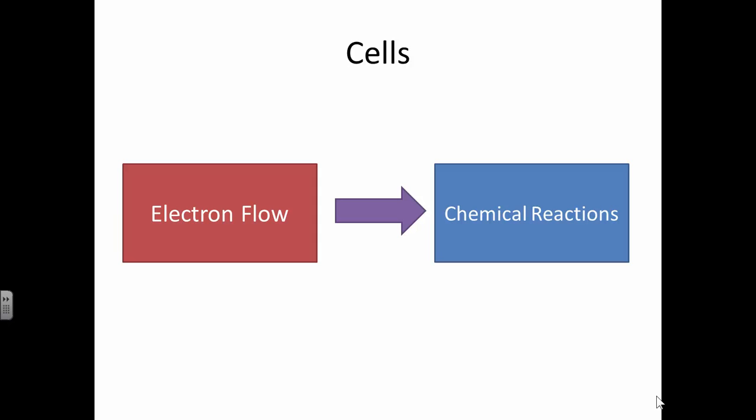You do this in electrolysis. But you can also do the same thing backwards. You can have a chemical reaction to produce an electron flow. And that's basically what a cell does.